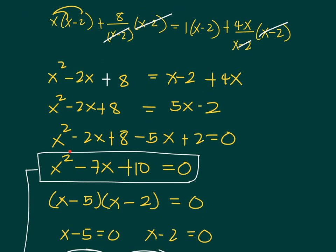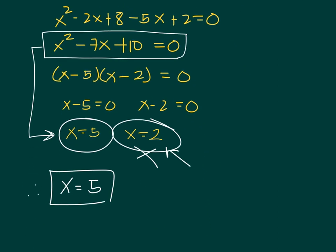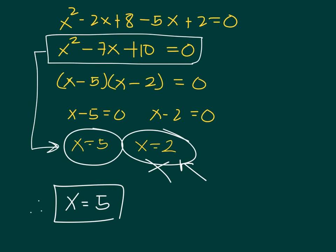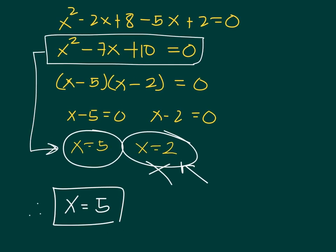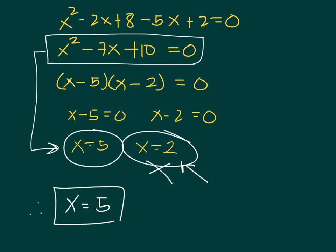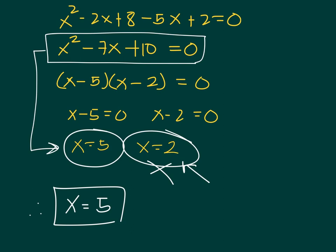Once you reach the quadratic form, factor the left side to find the values of x. Finally, always check whether the solutions you obtain are actually correct solutions. Sometimes a solution is an extraneous solution, meaning x is not allowed in the original equation. In this example, x cannot equal 2, while x equals 5 is an acceptable value. I hope you learned from this video — if you have any questions, just leave a comment.